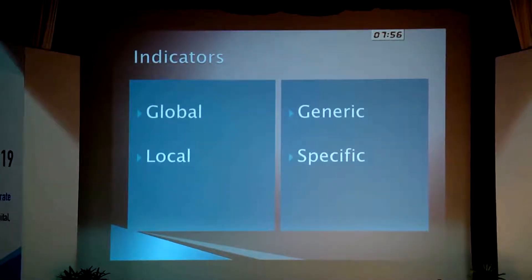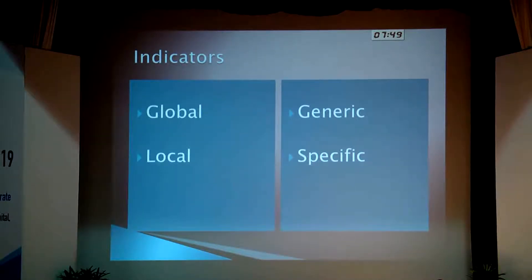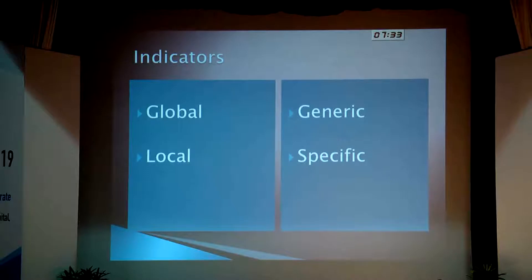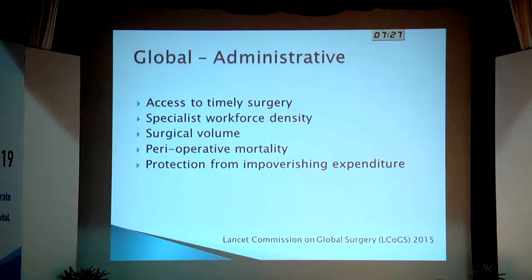If you look at indicators, there are indicators that are global, which assess the surgical service in a region, state, or district. And then you have indicators that assess the problem very locally. You have indicators that are generic, and then you have indicators that are specific to certain diseases, certain operations, or certain units. We will go through these one by one, looking at global indicators first.